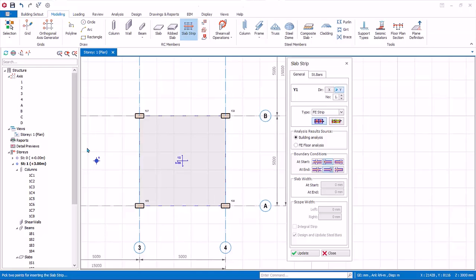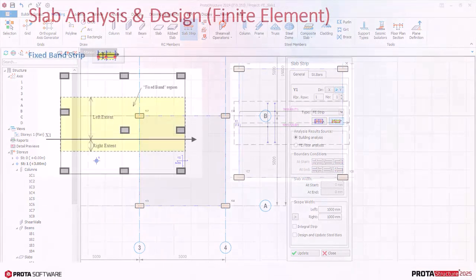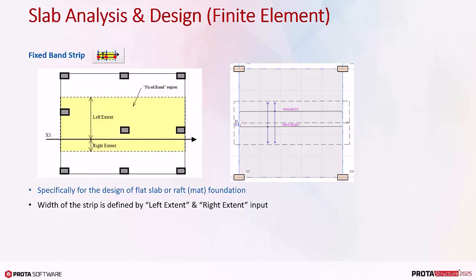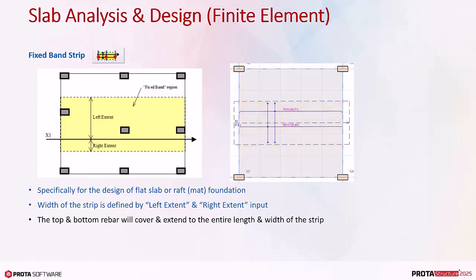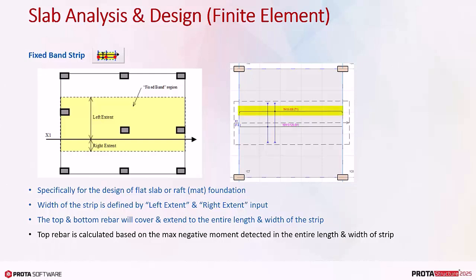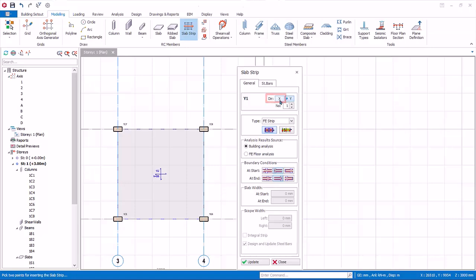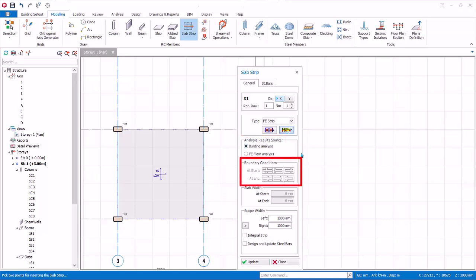Now move to the flat slab model. Since this is a flat slab, we cannot use the span strip — we must use the fixed band strip. The fixed band strip is specifically for the design of flat slab, raft, or mat foundation. Width of the strip is defined by left extent and right extent. A single arrangement of top and bottom rebar will be designed, covering and extending to the entire length and width of the strip. Top rebar is calculated based on the maximum negative moment detected in the entire strip. Bottom rebar is calculated based on the maximum positive moment. In the slab strip properties, choose X direction, under FE strip choose fixed band strip, and under analysis result source pick building analysis. Boundary conditions are not applicable for fixed band strip and hence are greyed out.